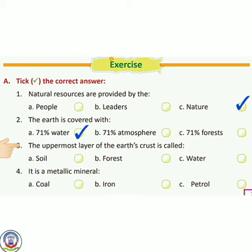Number 3 — the uppermost layer of the earth's crust is called... Earth के crust की सबसे ऊपर वाली layer को क्या कहते हैं? Options: soil, forest, water. The answer is A, soil. उसे हम soil कहते हैं।